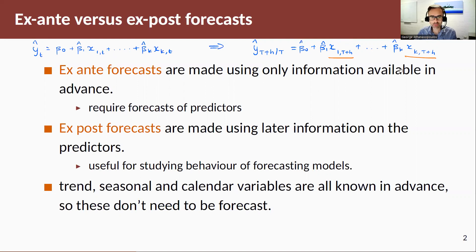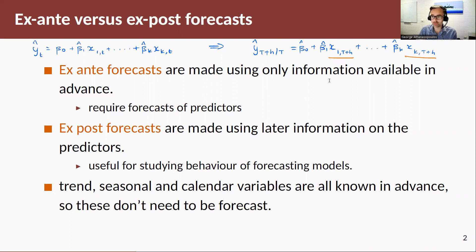So we've got two types of forecasting we can do. Ex-ante forecasts, which are made using only information available in advance. I'd know nothing about the future of my X's, hence I need to generate some forecasts for those X's and use those forecasts to predict the Y's. This is one of the major challenges with regression models, and people overcome this by using various strategies such as order regressions and so on.